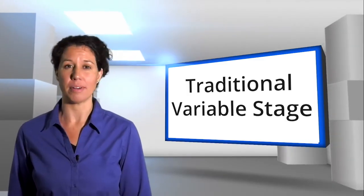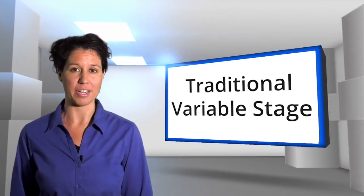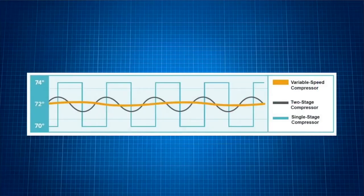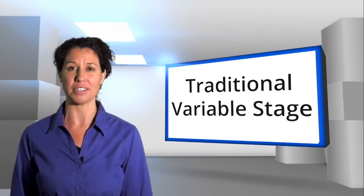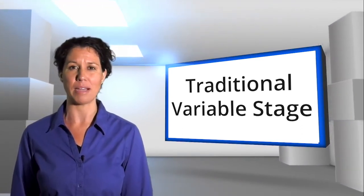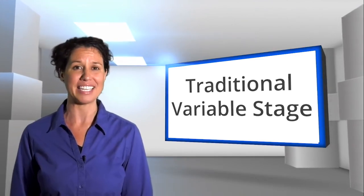A variable speed compressor runs at a lower setting using less energy for longer periods of time, and it has fewer on and off cycles. A system costs less to operate when it turns on and off less frequently, due to the greater amount of energy it takes for a system to power on. In addition to longer run times, a variable speed compressor will help your home's comfort by reducing indoor humidity and moisture and maintaining a more even temperature throughout your home.